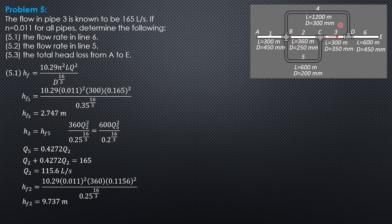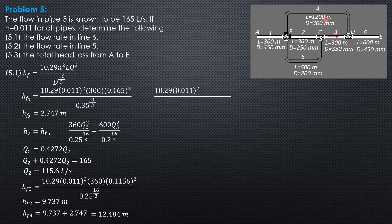Then we can now compute HF4. HF4 is HF2 plus HF3: 9.737 plus 2.747, which equals 12.484 meters. Knowing HF4, we compute discharge Q4: 10.29 times 0.011² times 1200 times Q4² over 0.3 to the 16/3 equals 12.484. So Q4 is 0.1166 cubic meters per second, or 116.6 liters per second.